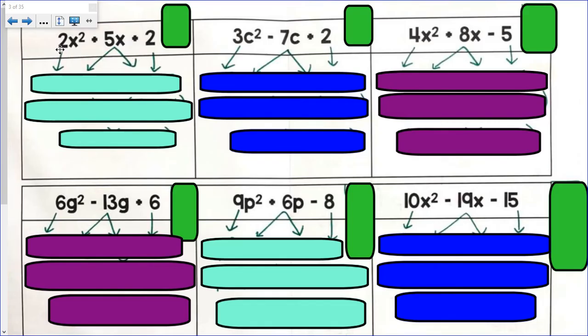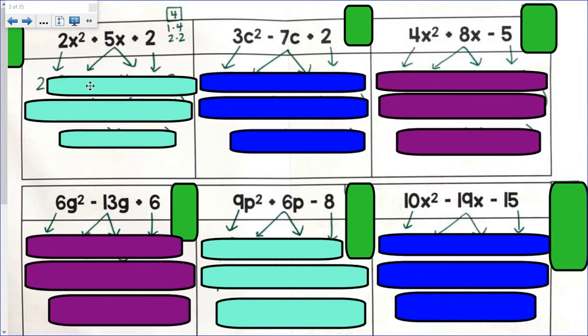Okay, first one. 2 times 2 is 4. My a times my c is 4. Factor pairs of 4 are 1 and 4, 2 and 2. Which one of those factor pairs is going to add up to get 5? 1 and 4. A positive 1, a positive 4. I bring down my 2x².